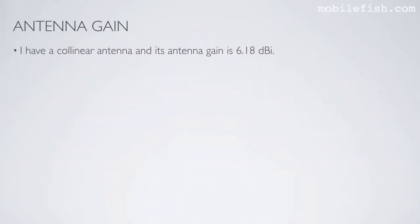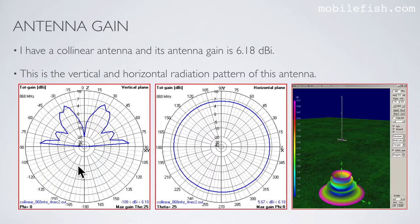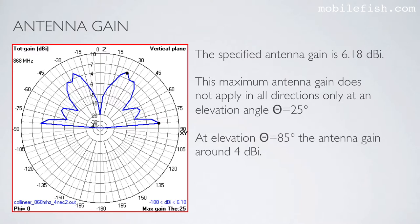A collinear antenna with a specified gain of 6.18 dBi is shown with its vertical and horizontal radiation patterns and 3D pattern. The specified antenna gain of 6.18 dBi only applies at elevation angle 25 degrees. At elevation angle 85 degrees, the antenna gain is around 4 dBi. When a manufacturer specifies an antenna gain, it doesn't mean that gain applies in all directions. An antenna manufacturer should provide horizontal and vertical radiation patterns; otherwise buyers have no idea how the antenna radiates.